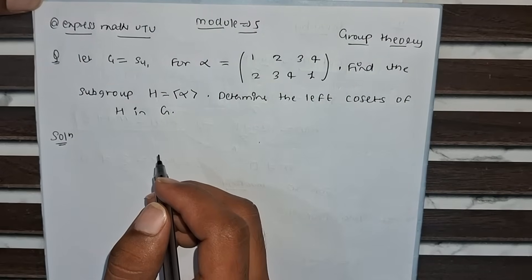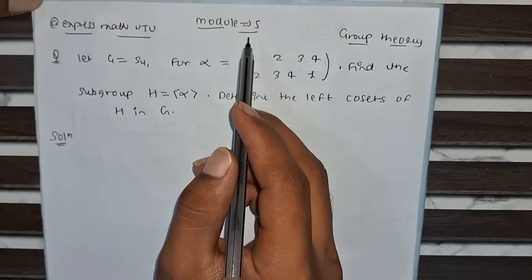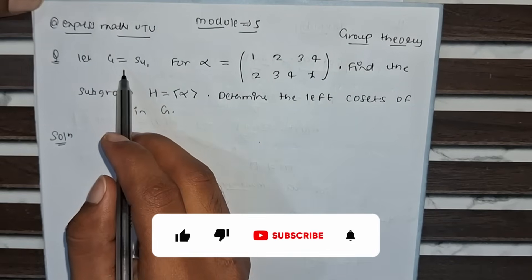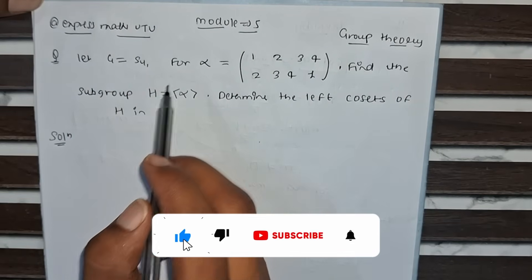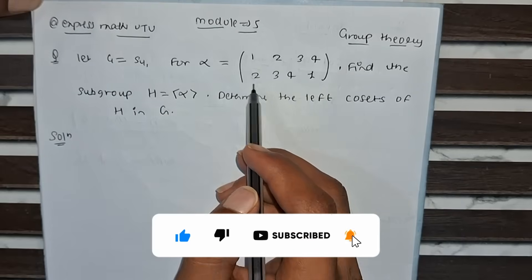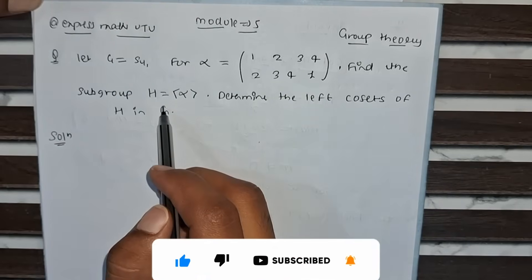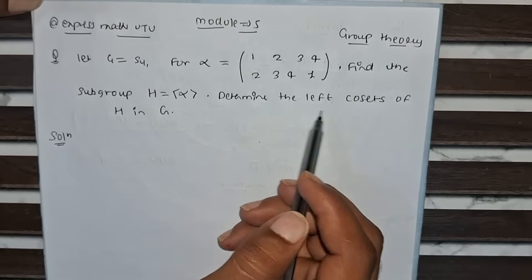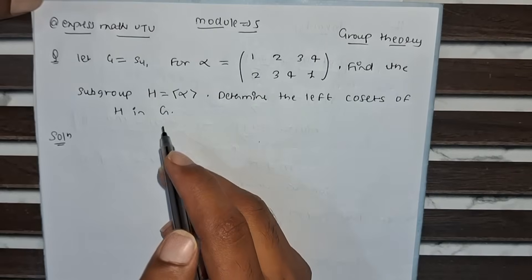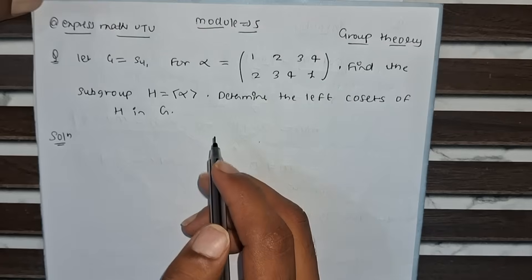Hello everyone, today we are going to solve another important problem from module 5, group theory. The question is: let G equal to S4, for alpha equals (1,2,3,4 / 2,3,4,1), find the subgroup H which is equal to alpha, and determine the cosets of H in G. So let's break it and solve it step by step.